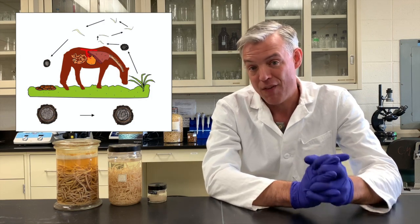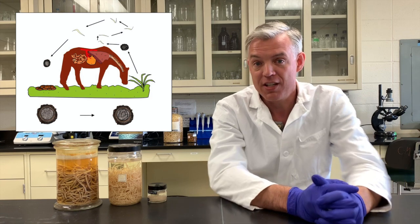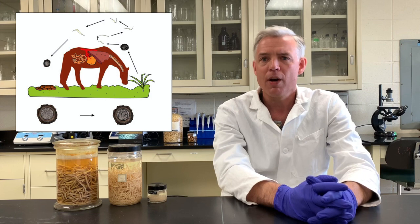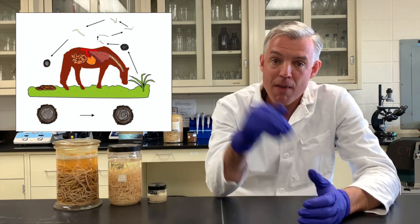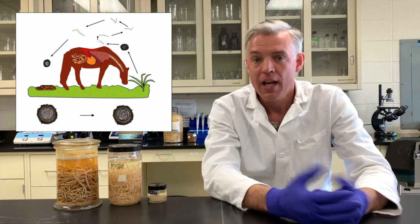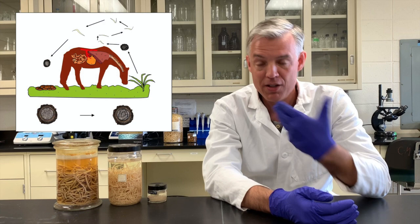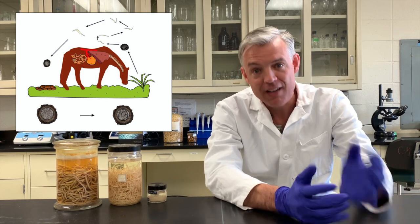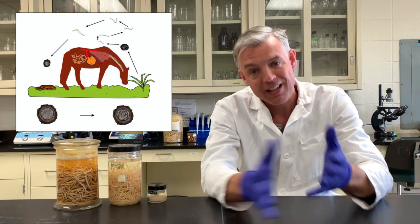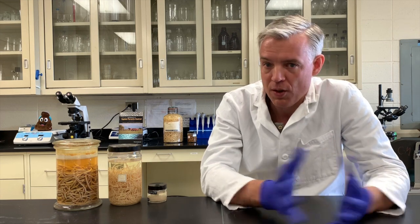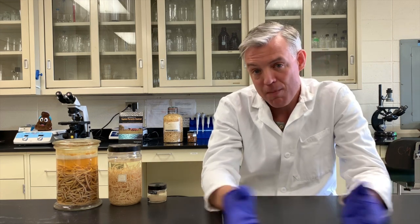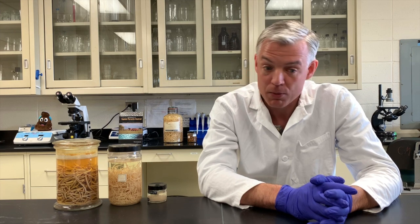What makes this parasite fascinating is what it does once inside the animal — it takes a lengthy migration through the body. They leave the intestinal tract, get into the bloodstream, make it to the lungs, then migrate through the airway and trachea, back up to the pharynx and mouth. The foal coughs and swallows, and for a second time they make it down to the intestinal tract, finally reaching the small intestine, where they live for the rest of their lives. They seem to need this migration because they require a lot of nutrients to grow, which they get by munching through tissues.